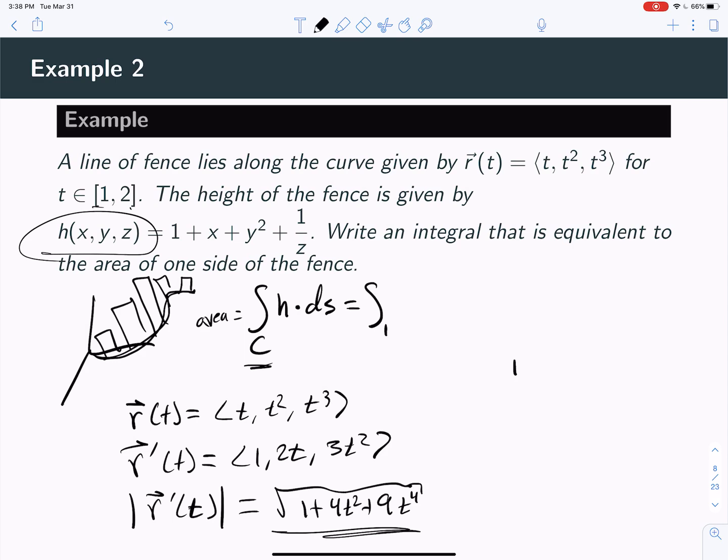We'll say the area equals the integral from 1 to 2 of the function times the square root of 1 + 4t² + 9t⁴ dt. So that's my ds.